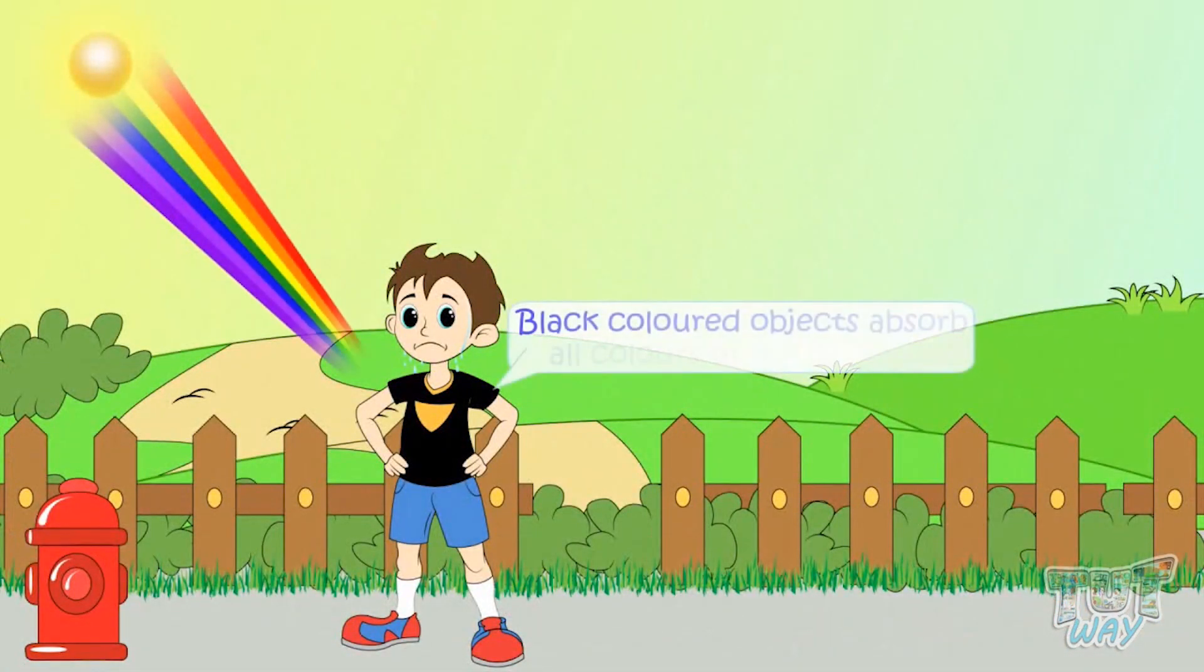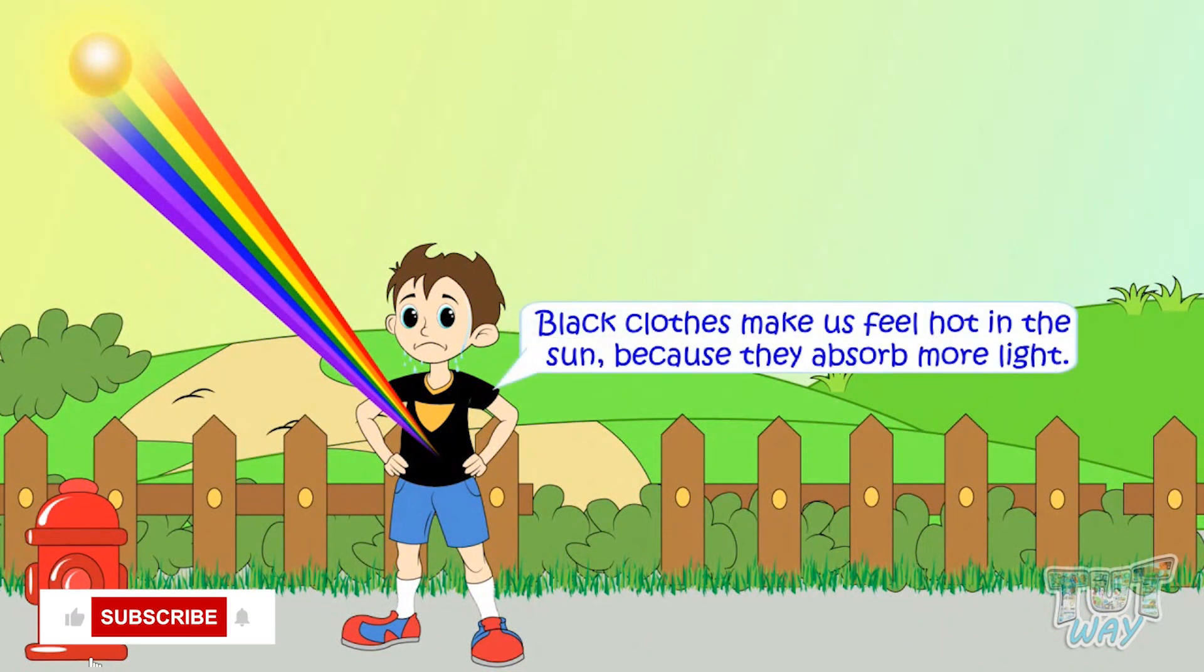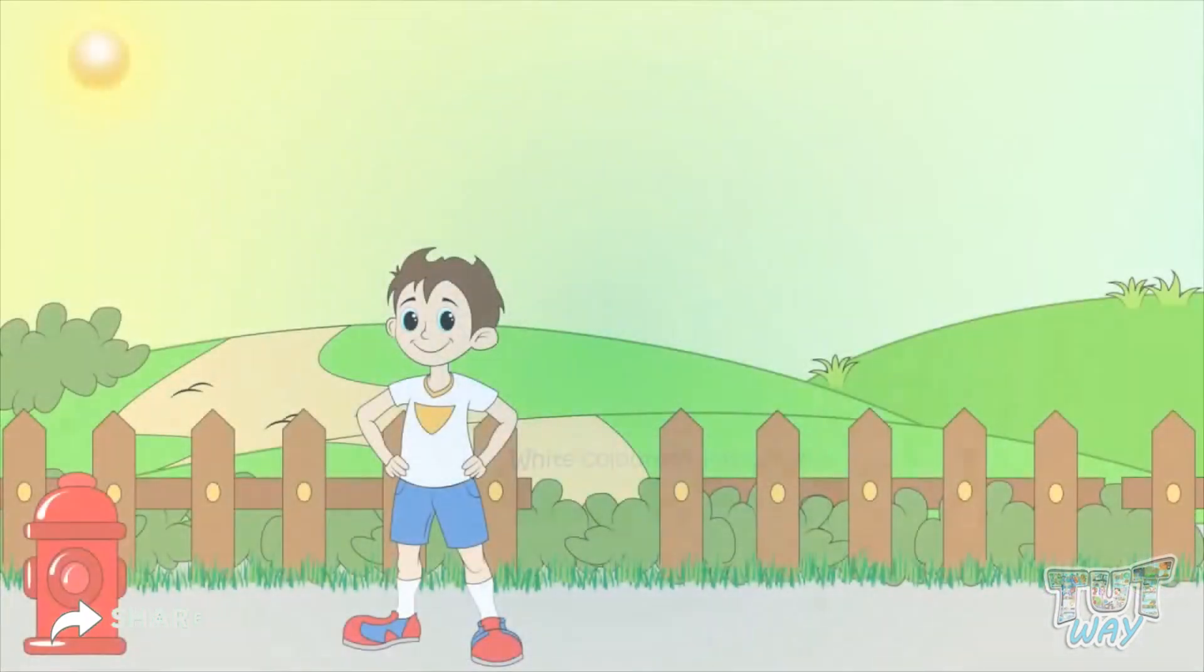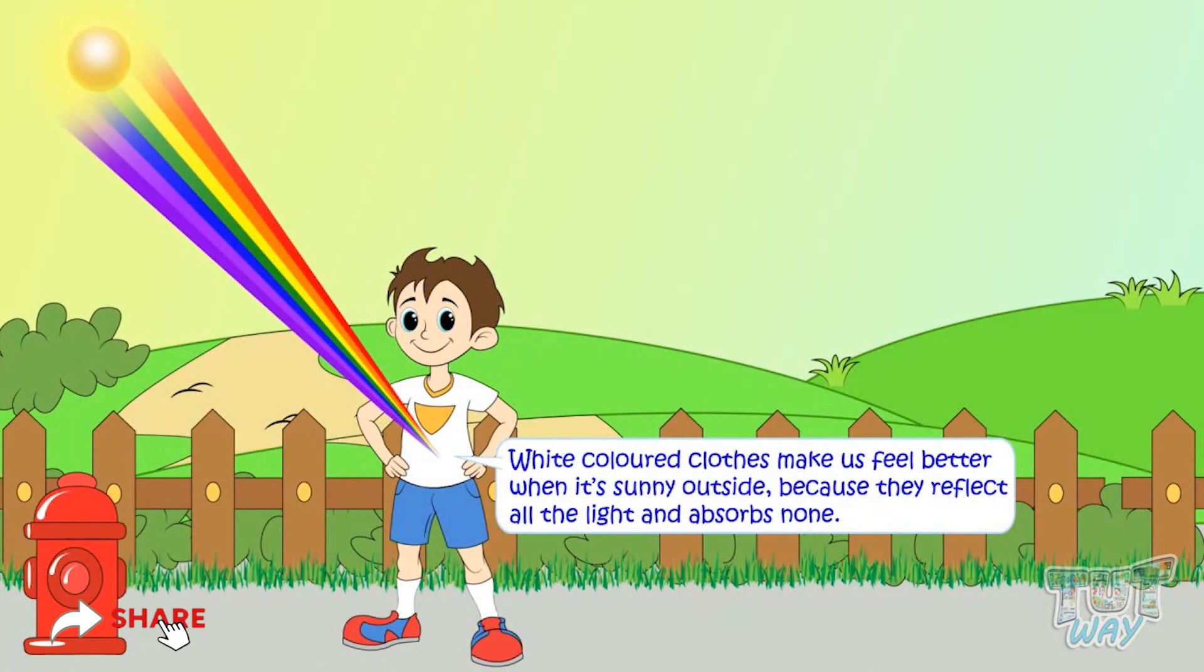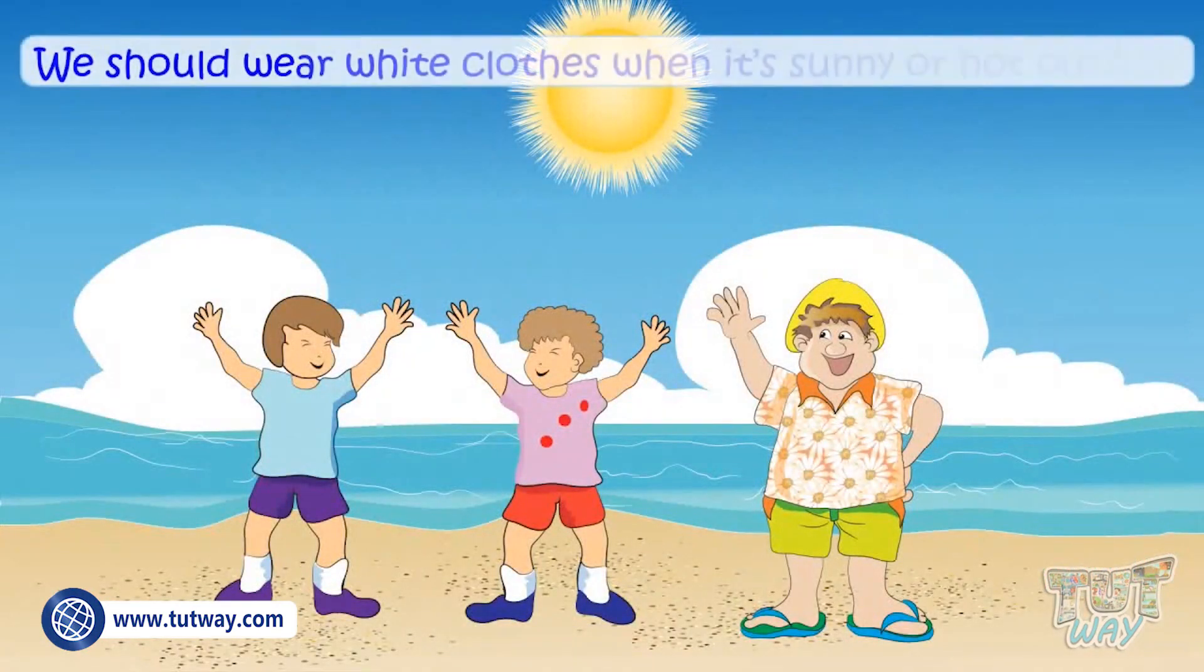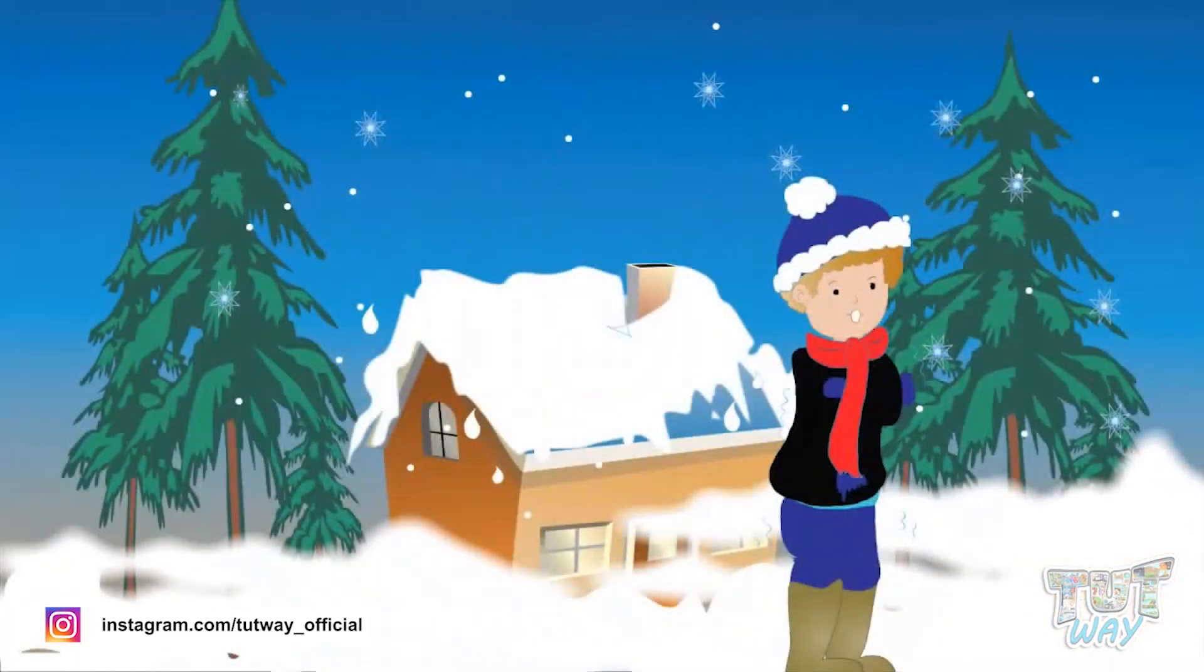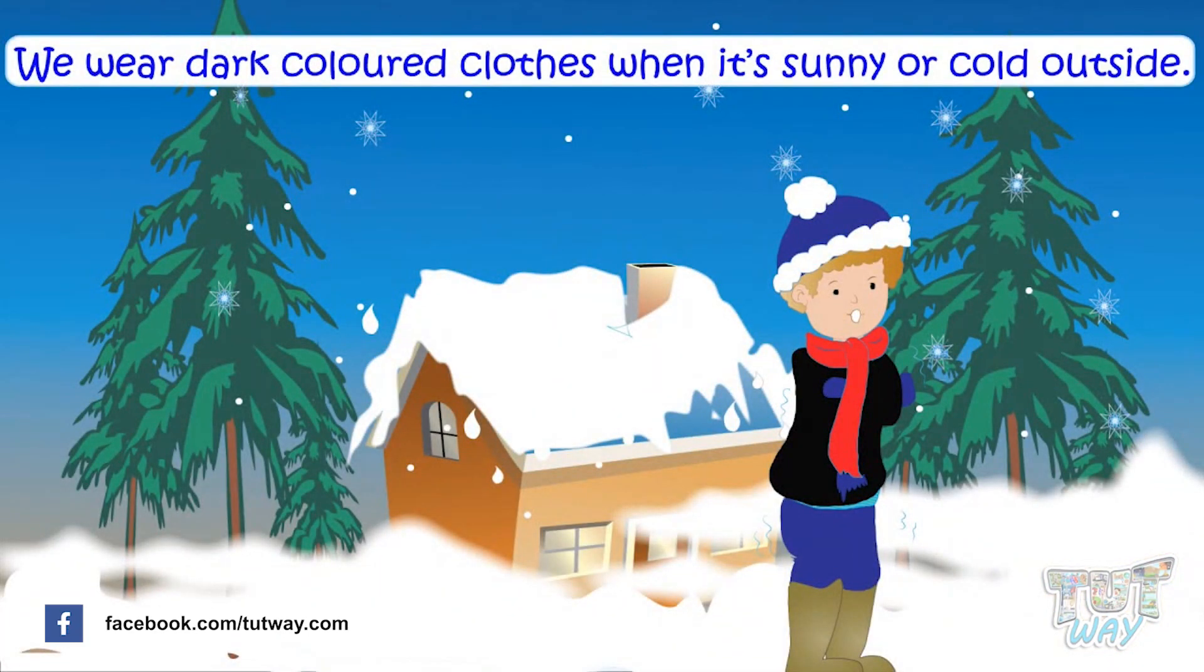Because black absorbs all colors or all light, black clothes make us feel hot in the sun as they absorb more light. And white color clothes make us feel better when it's sunny outside as they reflect all the light and absorb none. This is why we should wear white and light color clothes when it's hot outside and dark color clothes when it's cold outside.